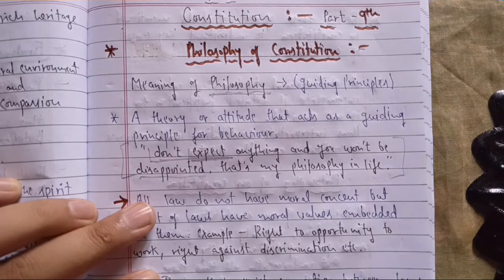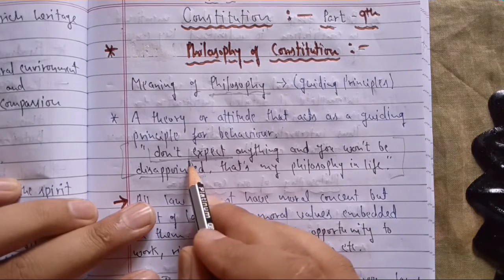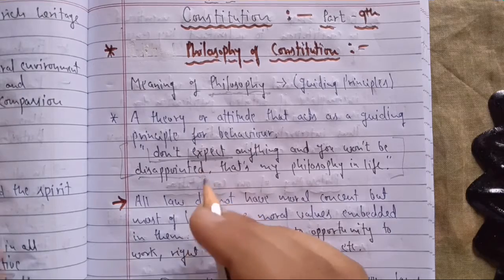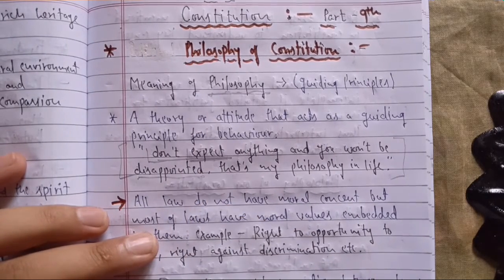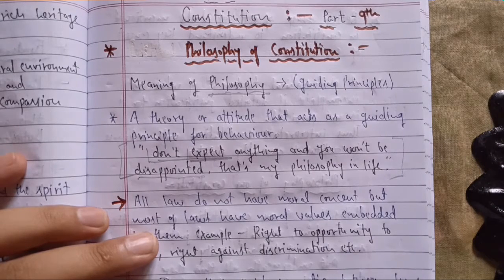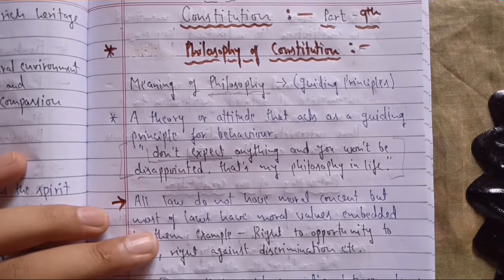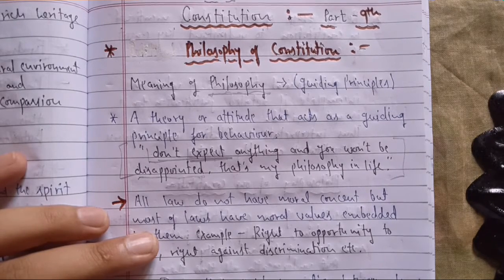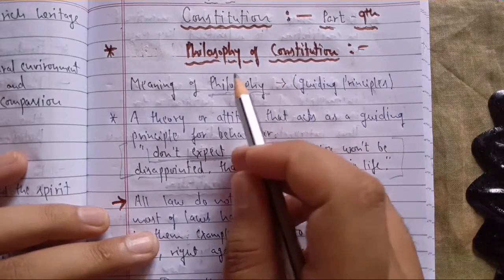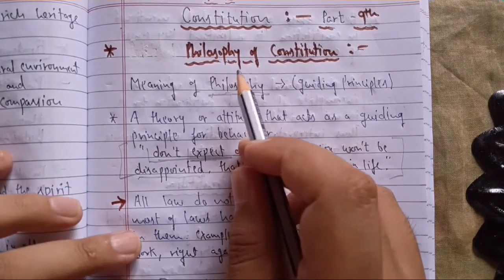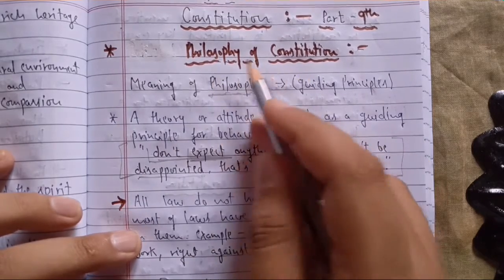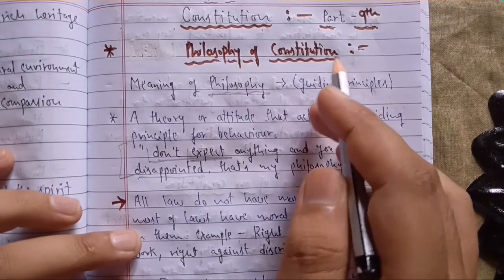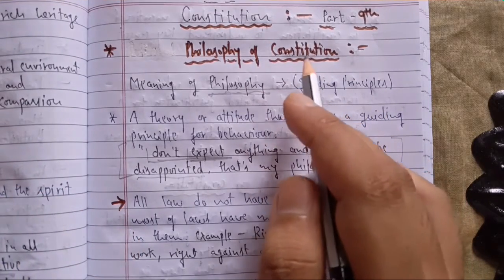As a human being you have qualities or values according to which you can say 'this is my philosophy.' For example, if you always get good marks and make excellent assignments, your philosophy might be hard work. Hard work is your guiding force — your guiding principle in life. In the same way, there are certain guidelines and philosophy according to which the constitution works, and we will understand what those principles are.